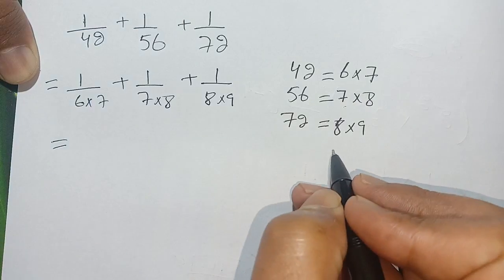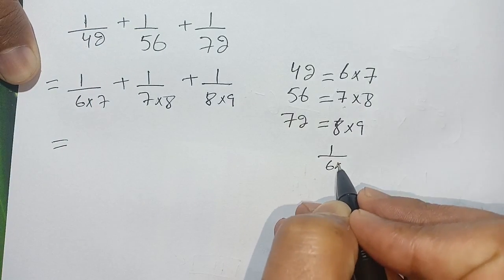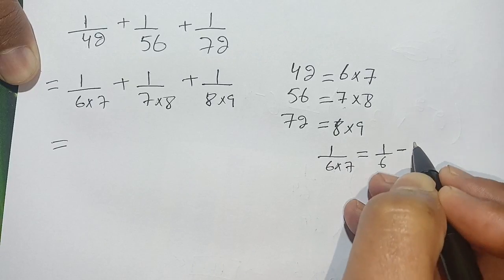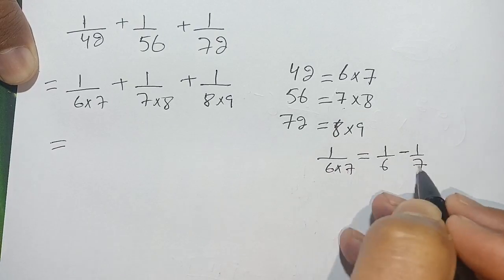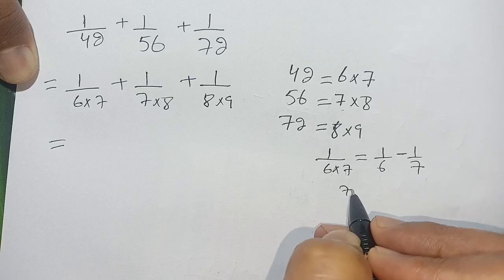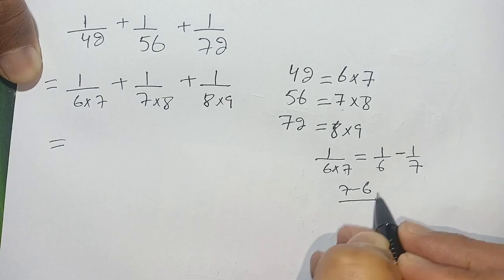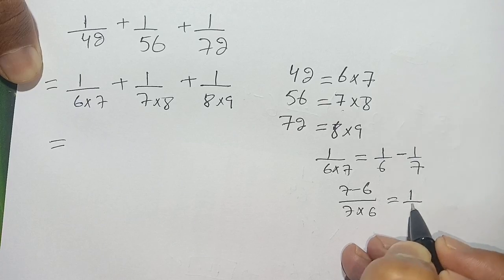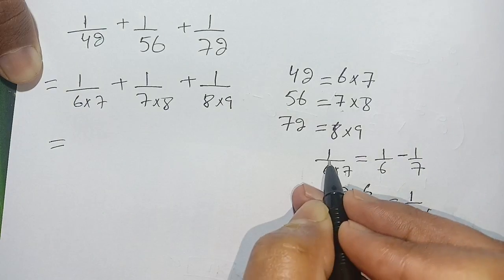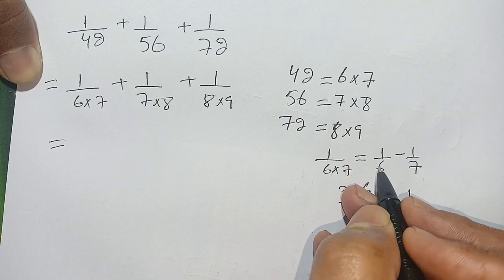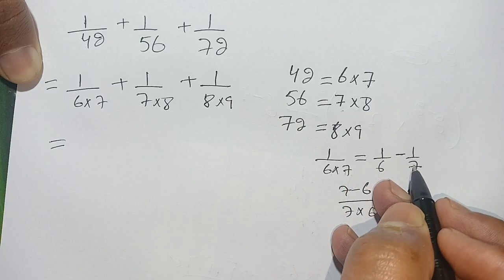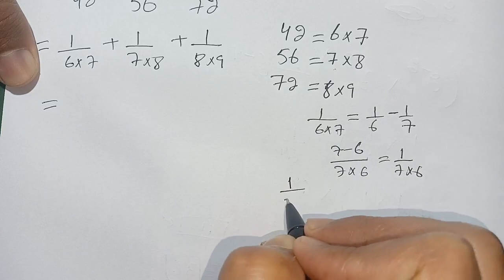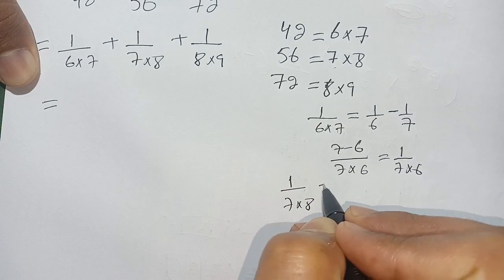In the next step, 1 divided by 6 times 7 — when we solve this it becomes 7 minus 6 divided by 7 times 6, which equals 1 divided by 7 times 6. Thus 1 divided by 6 times 7 can be written as 1 divided by 6 minus 1 divided by 7. Same case with 1 divided by 7 times 8: it can be written as 1 divided by 7 minus 1 divided by 8.